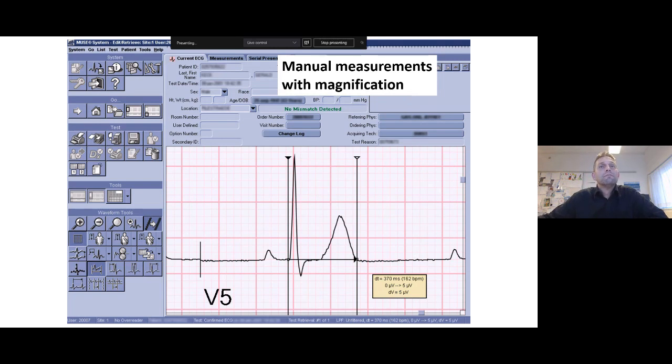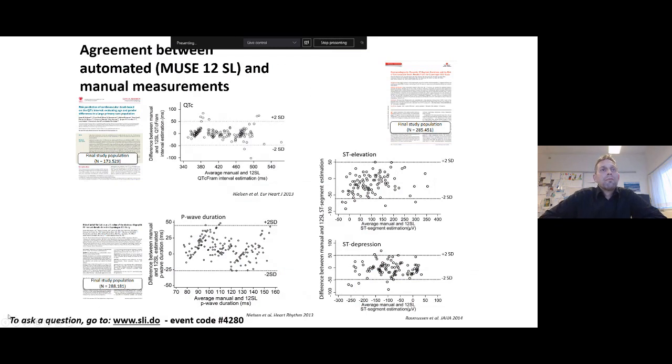It's also possible, as many of you may know, to manually measure intervals and amplitudes in MUSE. And this could be done in a blinded manner to the 12SL measurements in different ways. This is important because we can then use the manual measurements to quantify the agreement between the automatic measurements from 12SL and our manual measurements. And many times in the review process of our research, we are actually asked to do this type of comparison on a random sample, small sample of the data. But we find this also a very useful feature and it directly translates into our research papers.